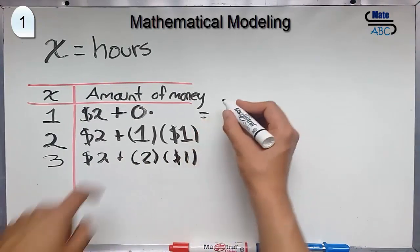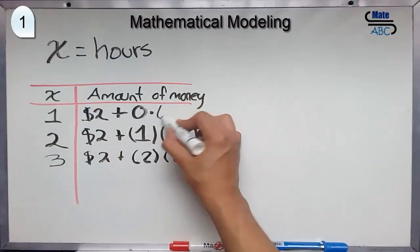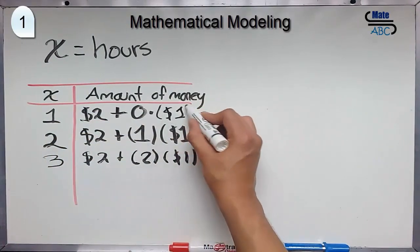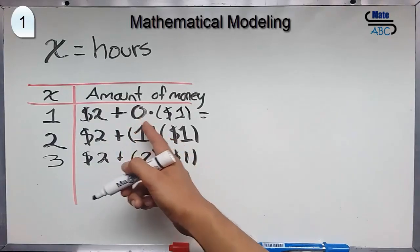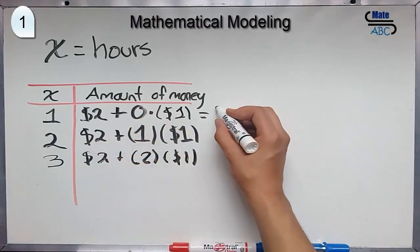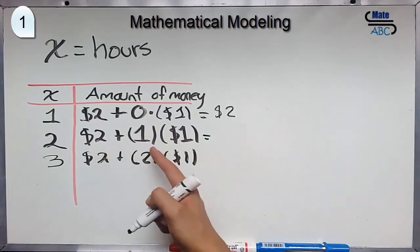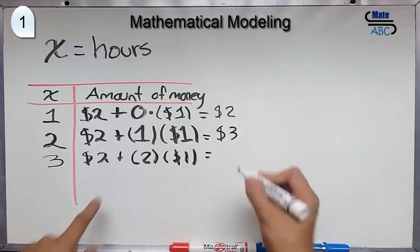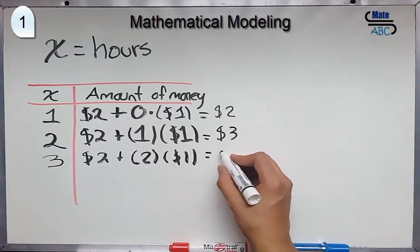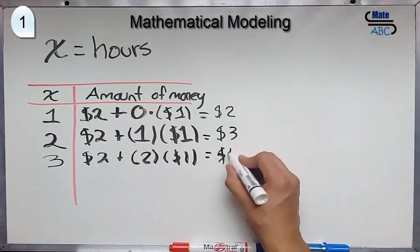In the third hour, you will be charged $2 plus 2 times $1. As you can see here, by the same logic, we can have $2 plus 0 times 1, this is $2. In here, you will have $2 plus $1 equals $3. And here, you will have 2 plus 2, so this will be $4.